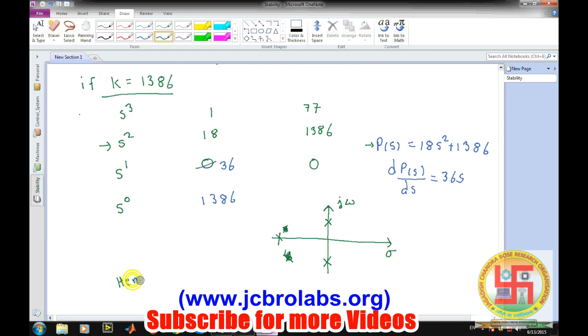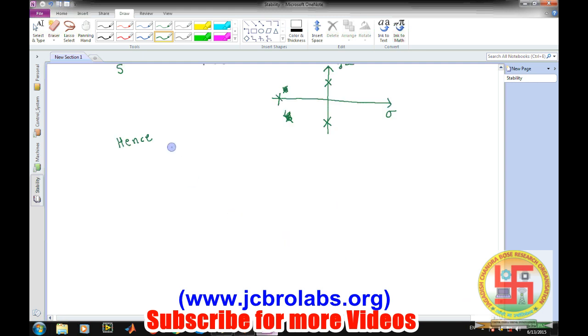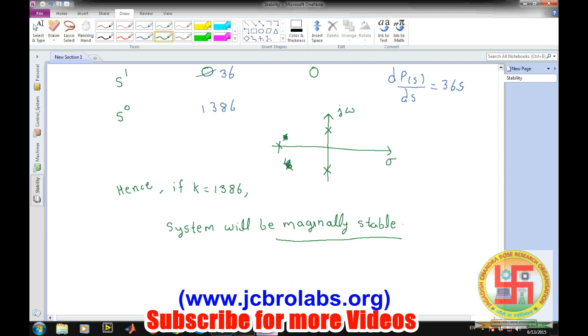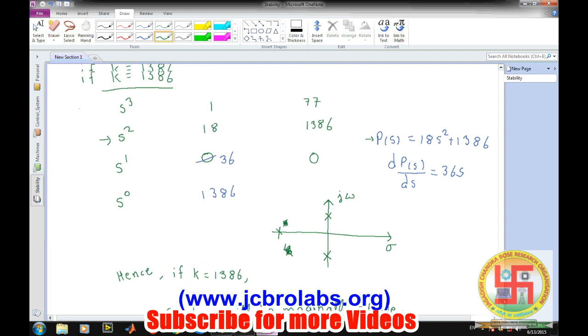Hence, we can conclude, if K equals to 1386, the system will be marginally stable. So this is how we can find all the ranges or the locations of the roots - for which ranges it will become stable, for which range it will be unstable, and for which range our system will become marginally stable. If you have some confusion about how to find where these roots will lie in case of entire row is zero, I will suggest you should go through our previous video of special case 2. That's it for this video. I hope you understood how to create a stability design with Routh-Hurwitz criteria. Thank you.